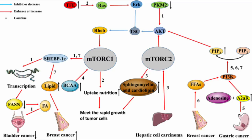mTOR, which stands for the mechanistic target of rapamycin, is a protein kinase that plays a central role in regulating cellular processes including growth, proliferation and survival. It functions as a key component in two distinct protein complexes. mTOR complex 1 is sensitive to rapamycin, a drug which inhibits its activity. It regulates processes related to cell growth including protein synthesis, ribosome biogenesis and autophagy. mTORC1 is activated in response to various signals including growth factors, nutrients and energy status, and integrates these signals to promote cell growth and inhibit catabolic processes like autophagy.